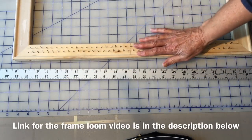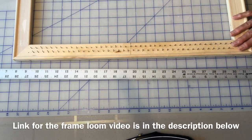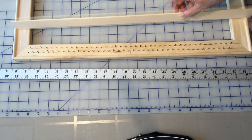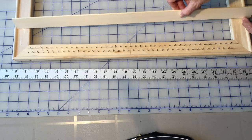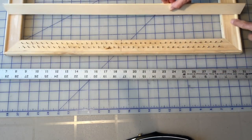On my previous video I made the frame loom and now my shed stick is going to be able to sit in here. I'm going to cut off about an inch off my shed stick off the end here so it sits right inside here.